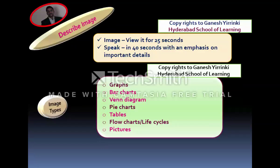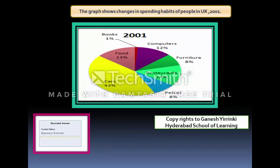The next question item is Describe Image. A diagram is displayed on the screen and you are given 25 seconds to look at it, understand what it is about, and note the details. At the completion of 25 seconds, the microphone opens and you are allowed 40 seconds to present about the diagram. The kinds of diagrams you may get include graphs, bar charts, Venn diagrams, pie charts, tables, flow charts, life cycles, pictures, or combinations of these.